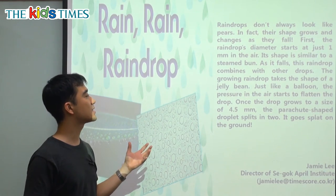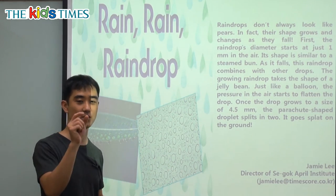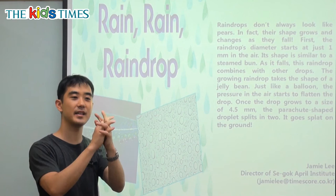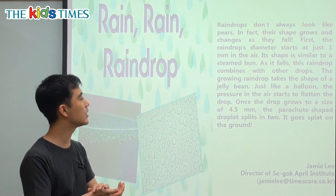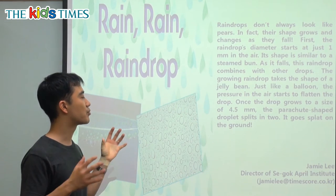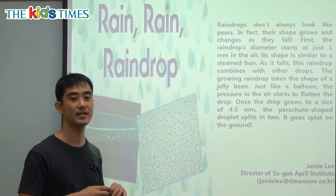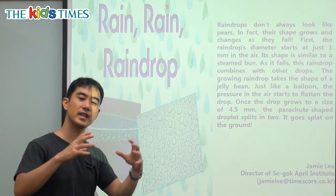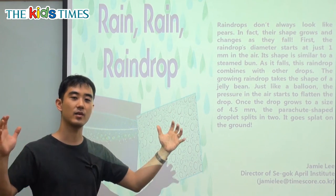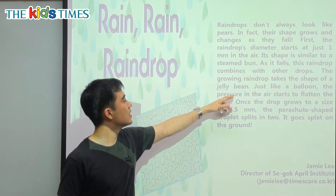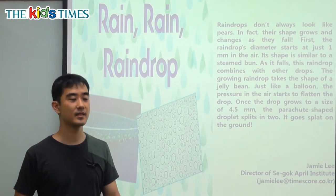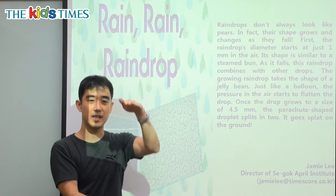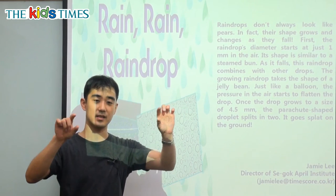The growing raindrop takes the shape of a jelly bean — like those candies that we know. So again, it's still changing: combining, size is changing, shape is always changing. Just like a balloon, the pressure in the air starts to flatten the top. The pressure in the air means the air is trying to squeeze the raindrop, so it starts to flatten the drop — making it go from round to a little bit flat.